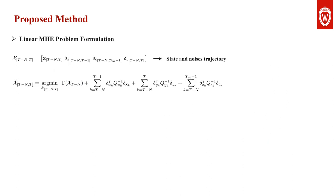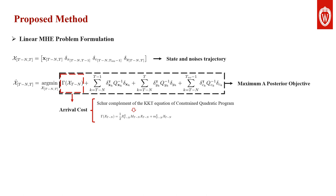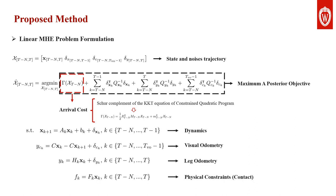The linear velocity estimation is formulated as a linear MHE. The arrival cost is calculated by the Schur complement of the KKT equations of a constrained quadratic program. The resulting objective preserves the optimality of the original MAP problem. The MHE is subject to several constraints representing dynamics, visual odometry, leg odometry, and physical constraints such as contact.